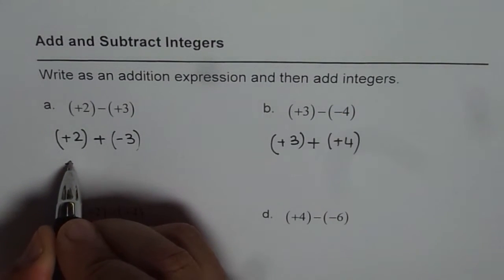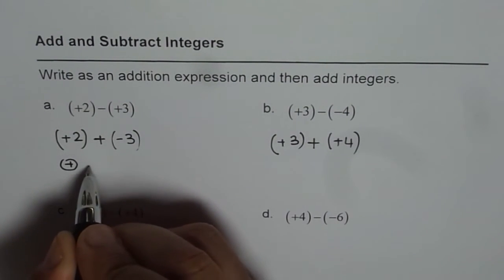We have (+2) + (-3). Plus 2 means 2 positive counters. So, we have these 2 as positive counters.